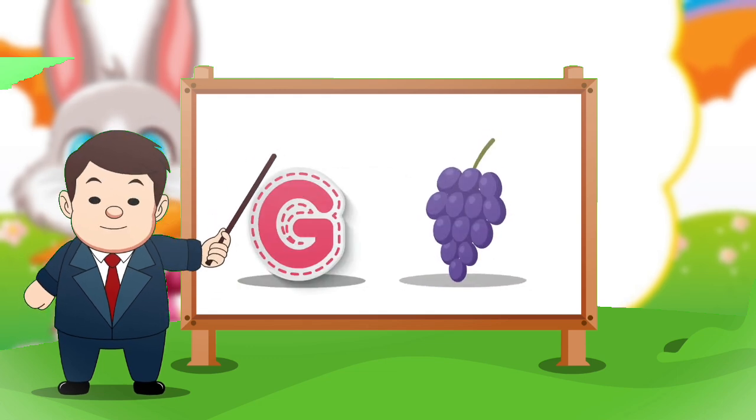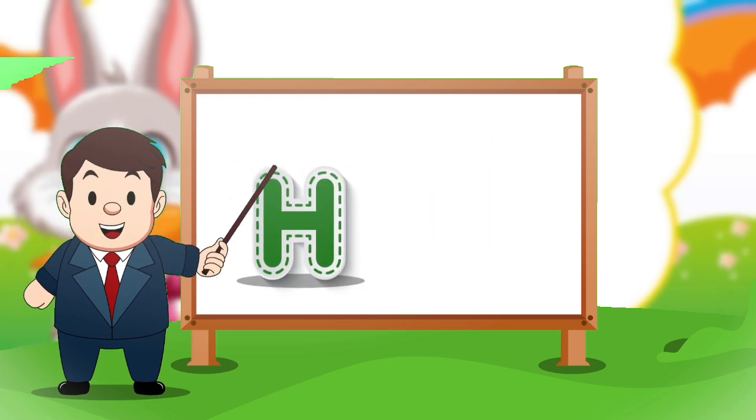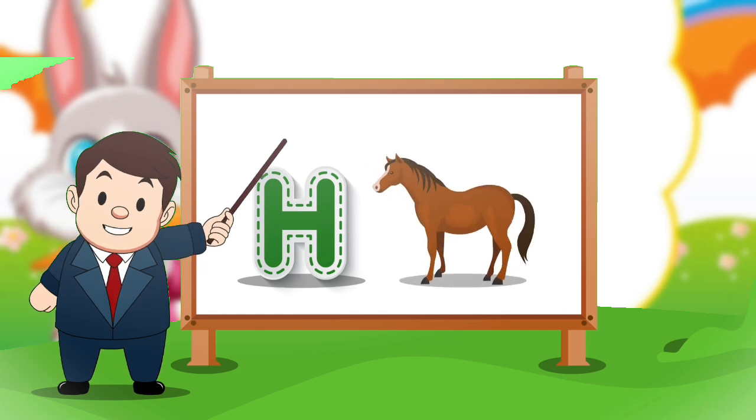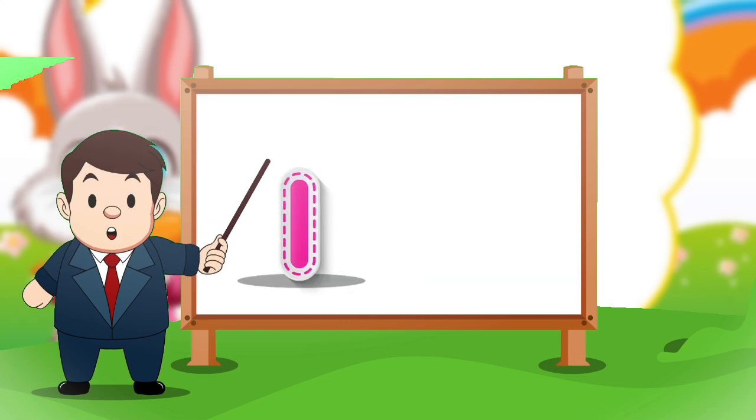G for crab, H for horse, I for ice cream